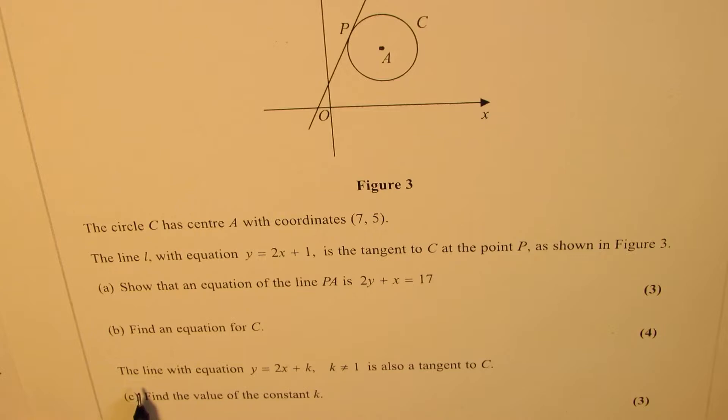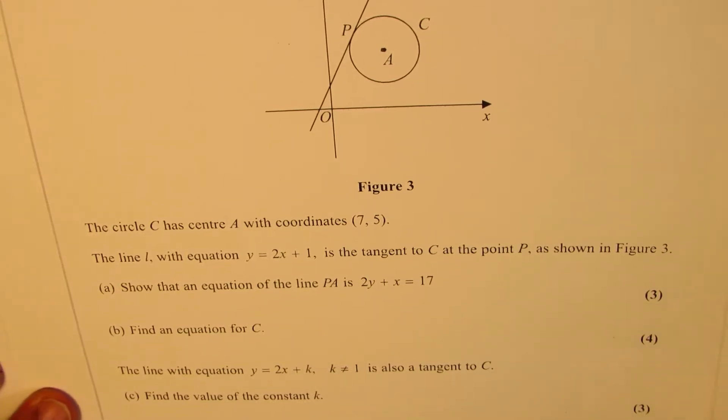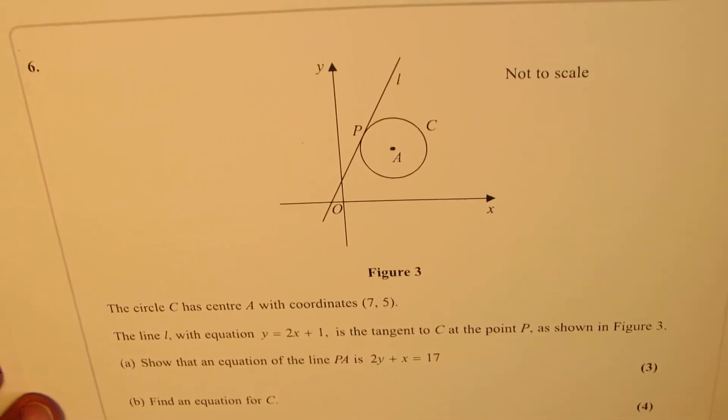The line with equation y = 2x + k, where k is not equal to 1, is also a tangent to C. Find the value of k. You can always pause the video, answer the question, and look into my suggestions later. Now here is how we are going to solve it.